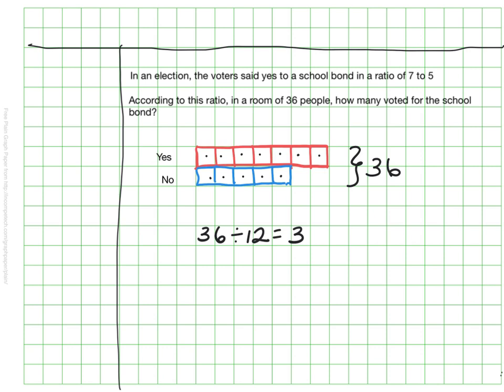So if I want to know how many people voted for the school bond I would be able to say well each of these counts as three people and I would be able to say how many people total voted for the school bond.